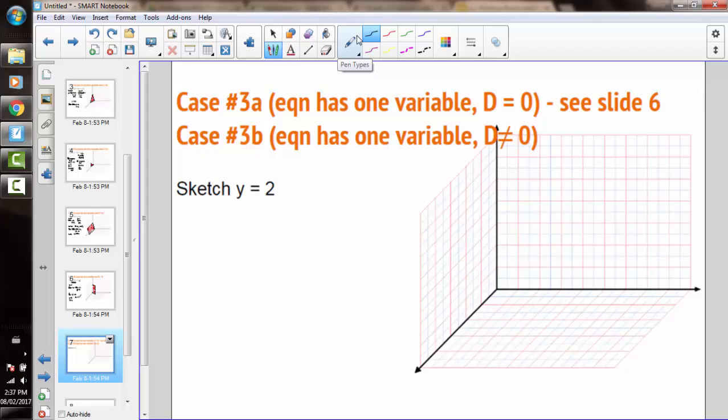The final case is we just have an equation with one variable that describes the plane. For the case where d equals 0, go back to the previous example. That would give you a good idea how to do it. When d does not equal 0, this means that the plane crosses the y-axis at y equals 2.